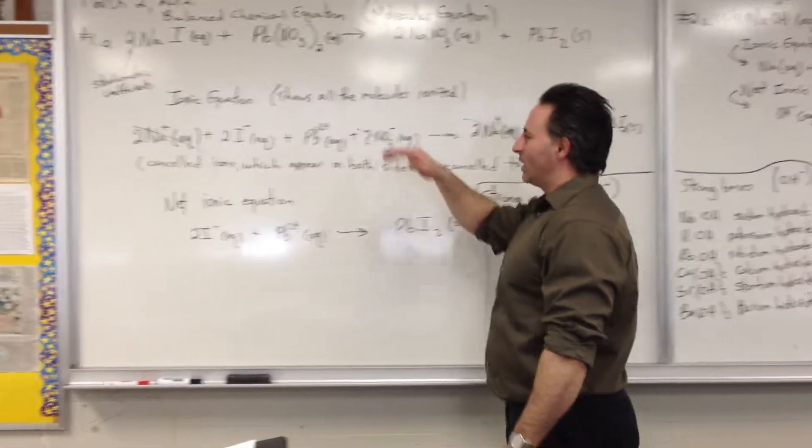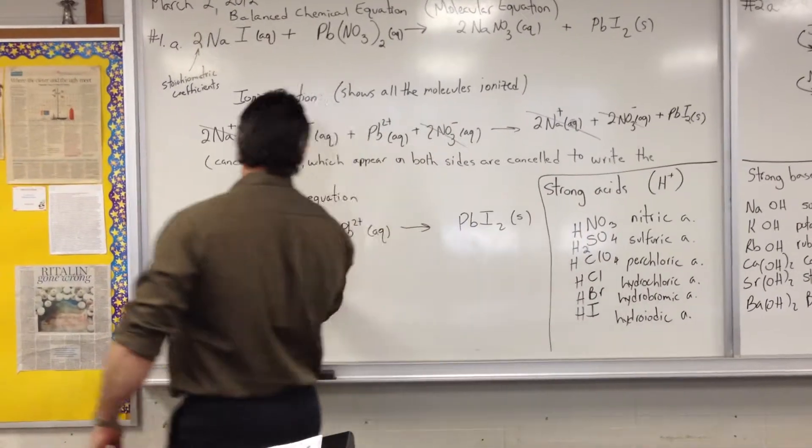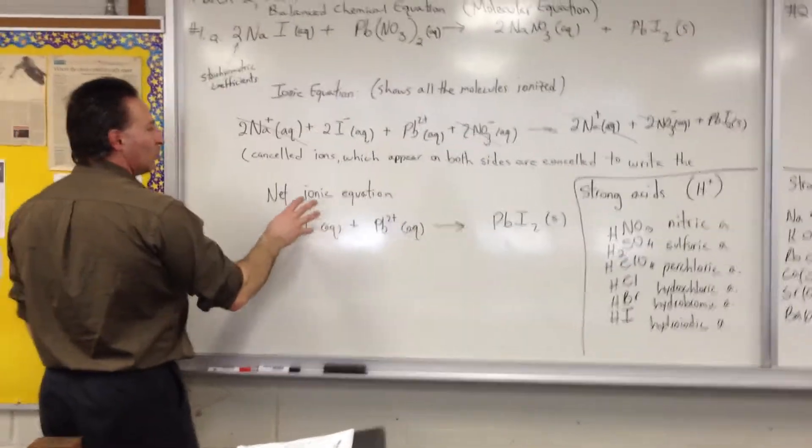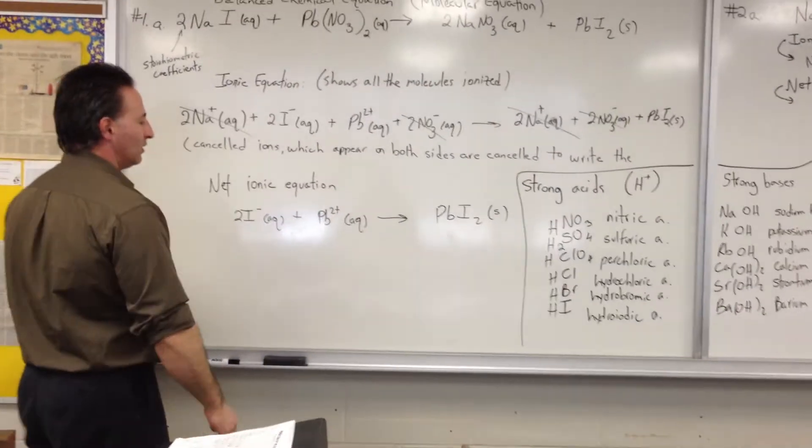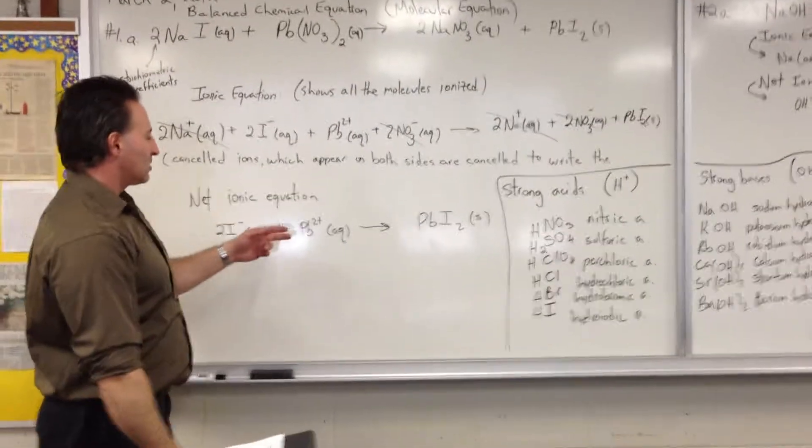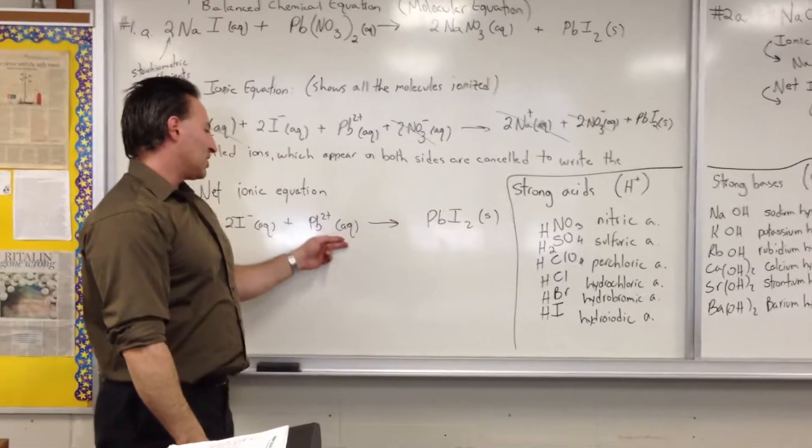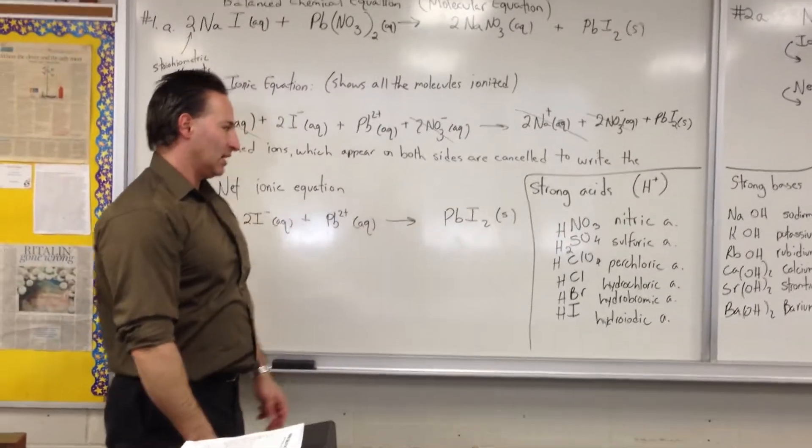We cross those out to write the next equation, which is called the net ionic equation, where you only show the two things that are reacting to form the solid. So two iodide ions and one plumbus ion combined to form lead iodide.